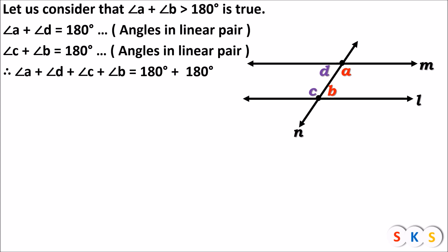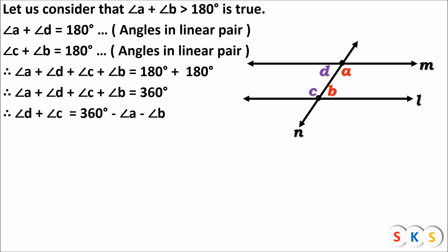To find the sum of angle D and angle C, I shift angle A and angle B to the right-hand side. So we get: angle D plus angle C equals 360 minus angle A minus angle B, which we can write as angle D plus angle C equals 360 degrees minus (angle A plus angle B). I have taken the minus sign as common.